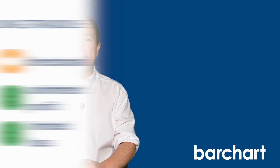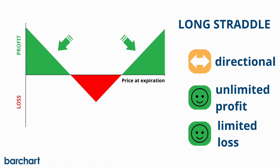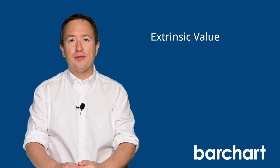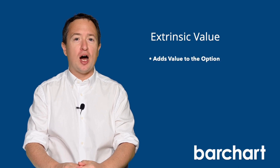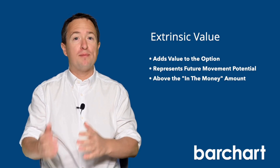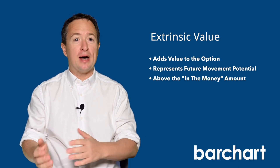If the option is in the money before expiration, investors can sell it and realize a profit. This is often preferred if there's still extrinsic value left over, as selling an option can often yield a higher profit than exercising it. Extrinsic value is what somebody pays for the option's potential future movement over and above the amount that it's in the money.